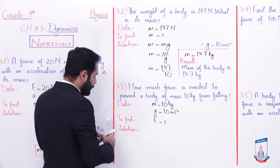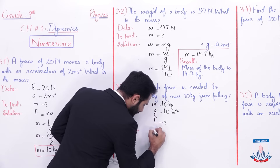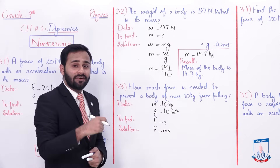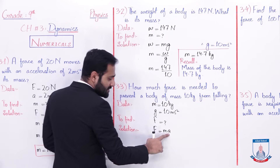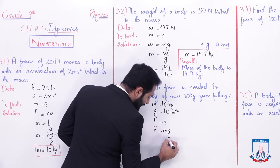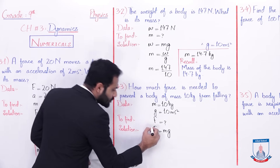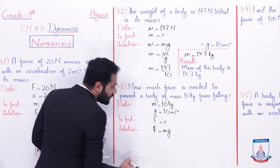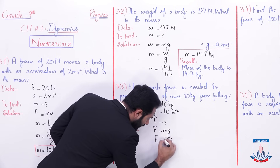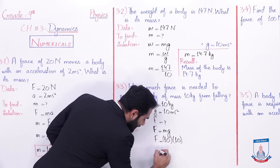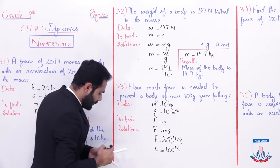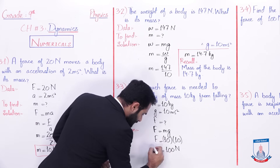Write the solution. As we studied according to Newton's second law of motion, F is equals to ma. Yahan par kyunke gravitational acceleration act kar raha hai, to main is acceleration ki jagah par g ko replace kar dunga — that is gravitational acceleration. Is formula mein values put karte hain: F is equal to mass 10 kilogram multiplied by g ki value 10 meter per second square. Further jab multiply karenge, it becomes 100 newton. This is the final answer.